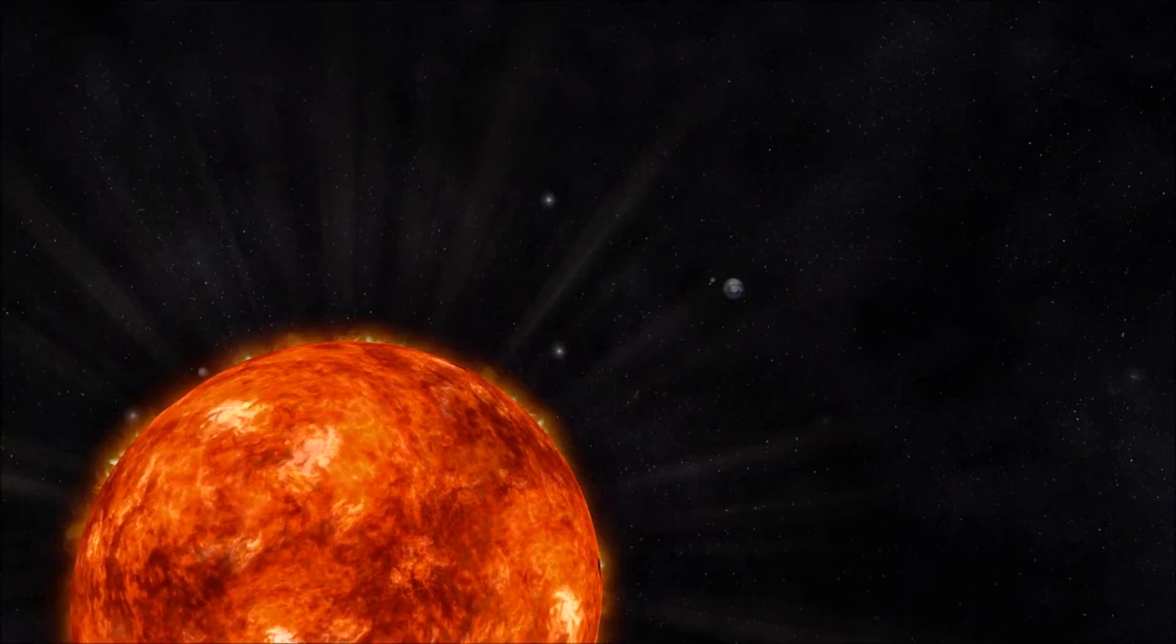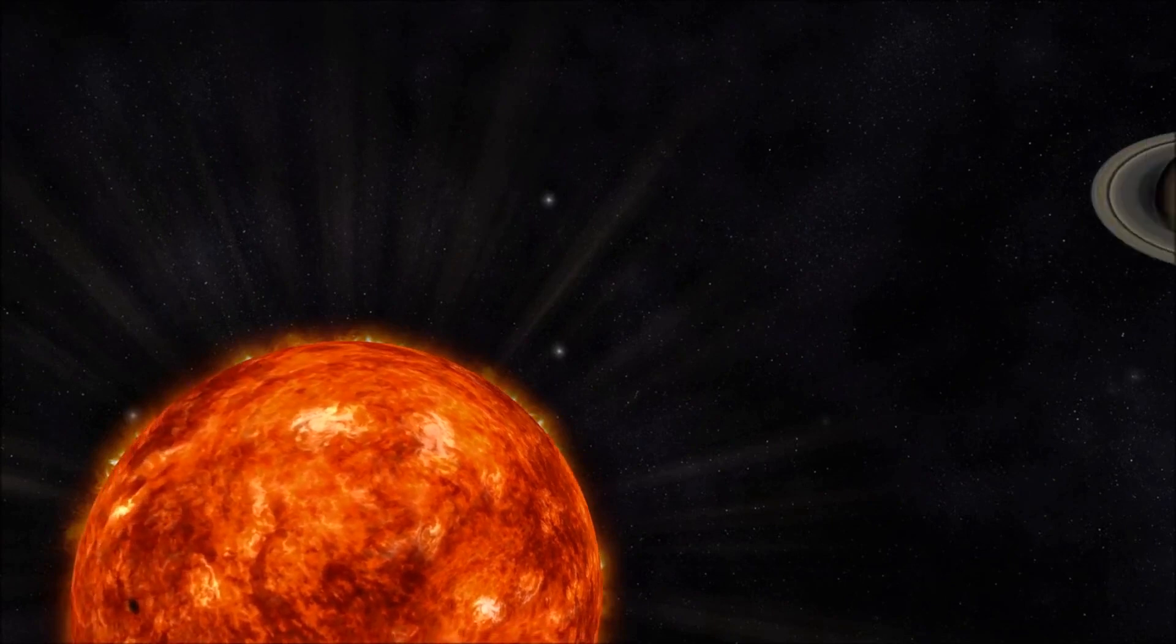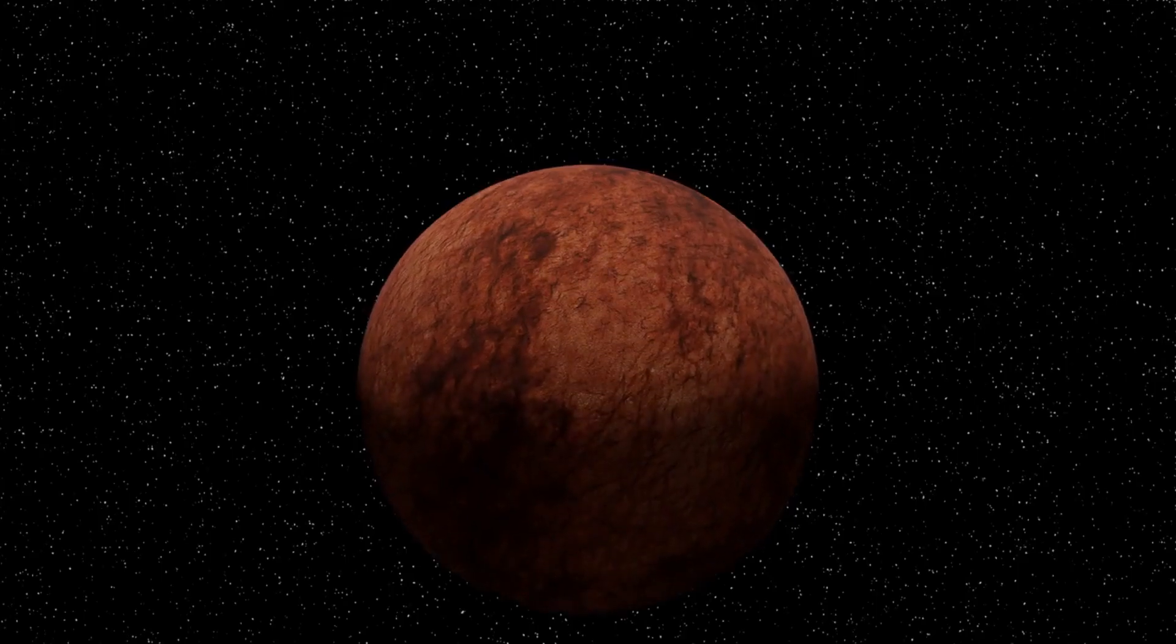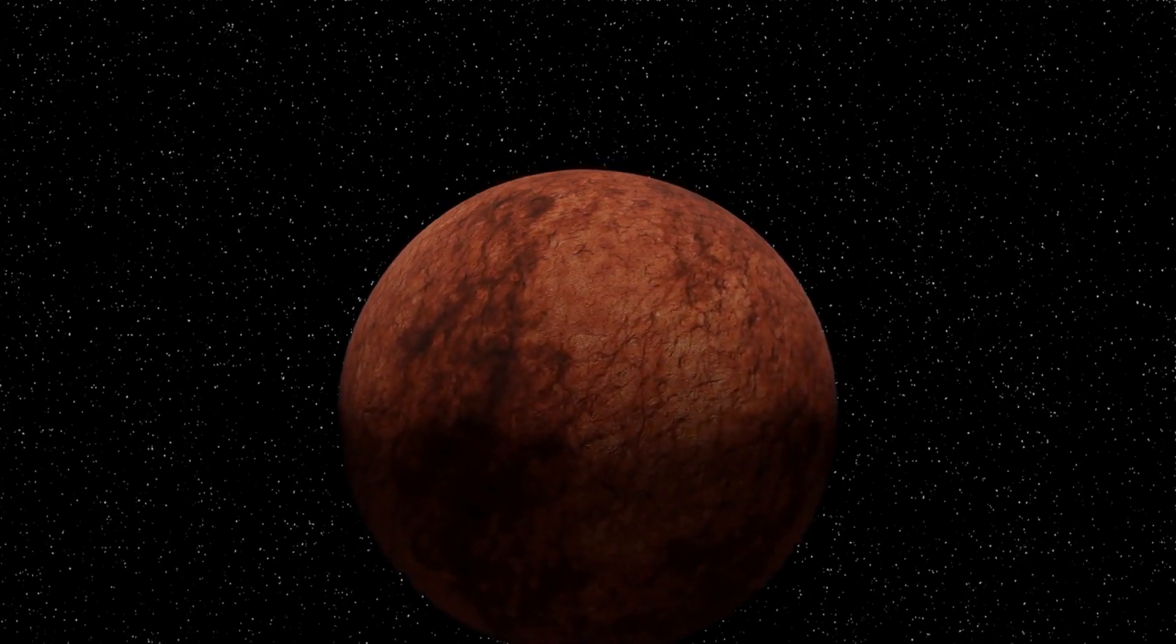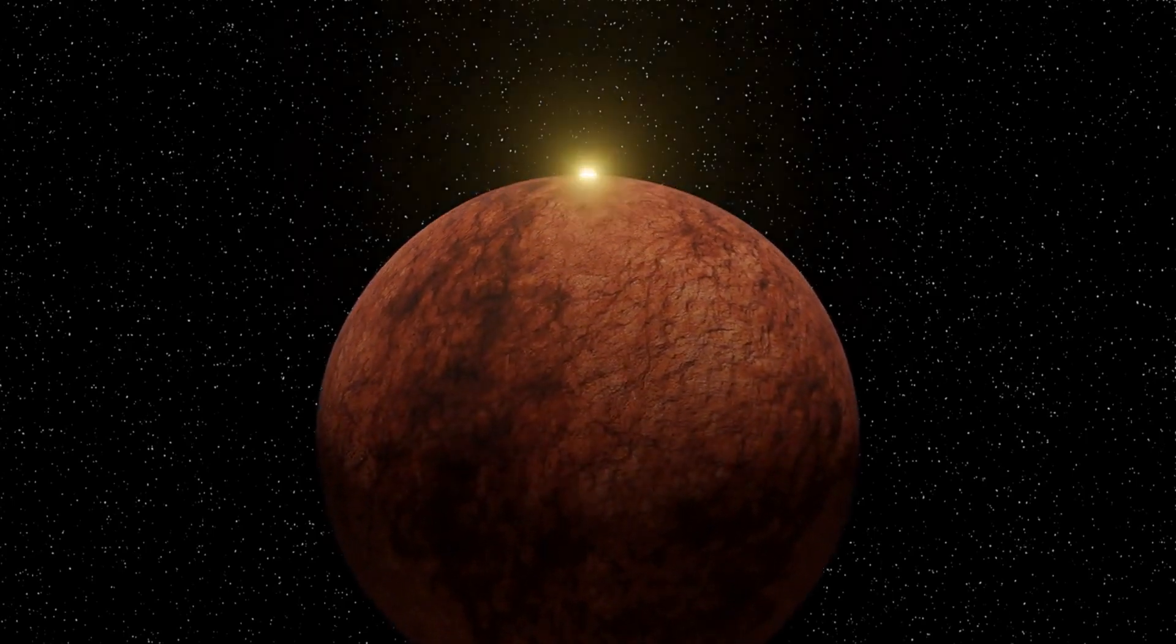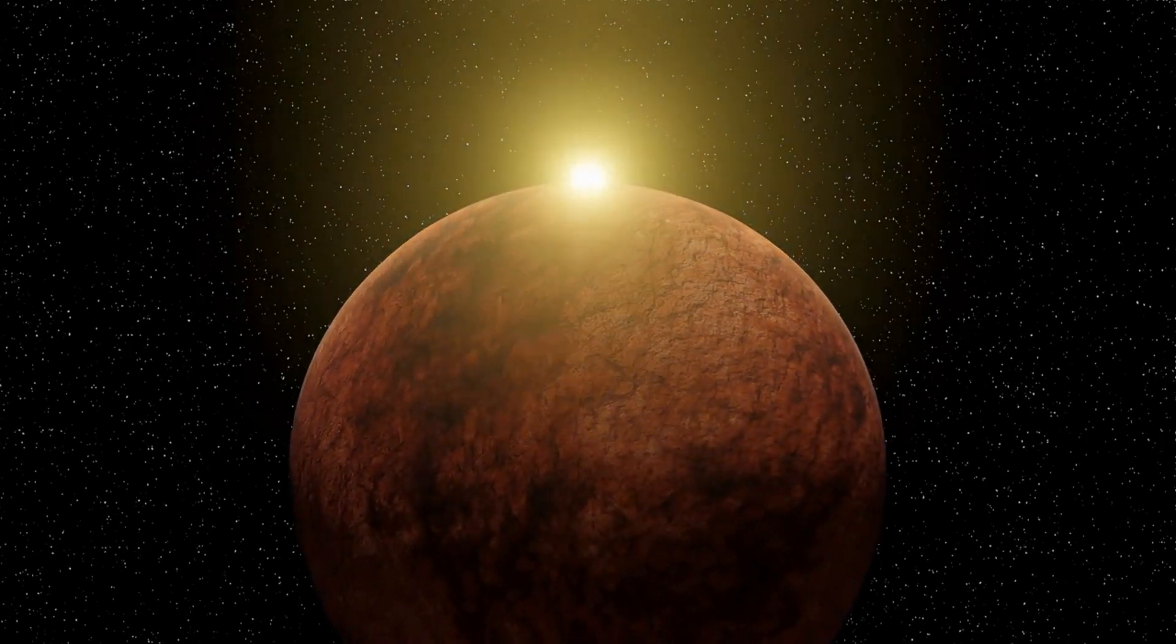The process of the sun rotating around its own axis is known as solar rotation. Solar rotation is an essential aspect of the sun's behavior and plays a crucial role in the formation of its magnetic field.